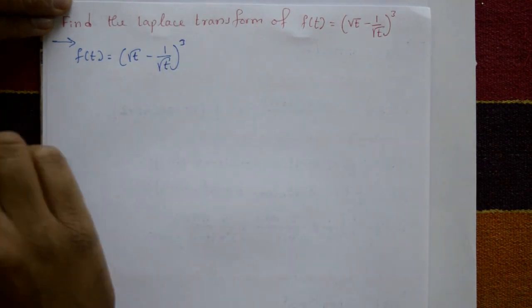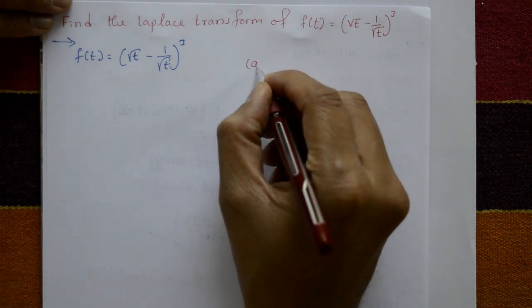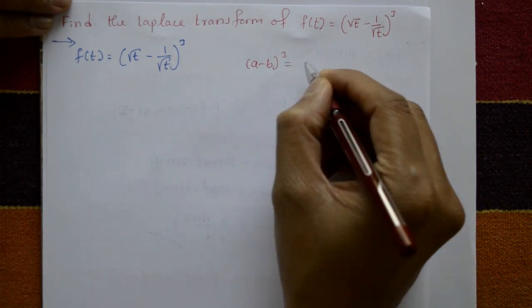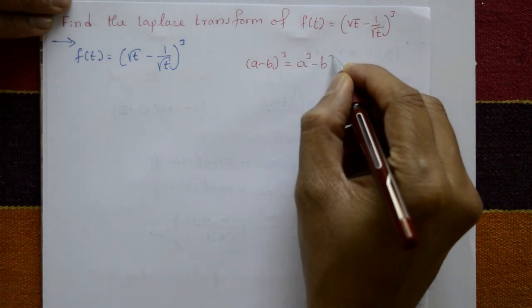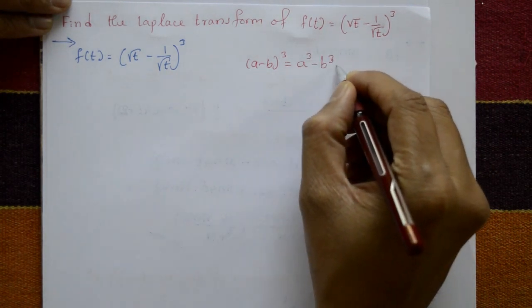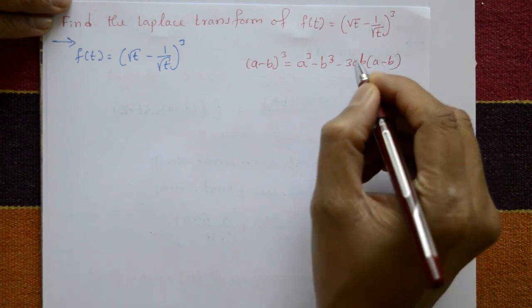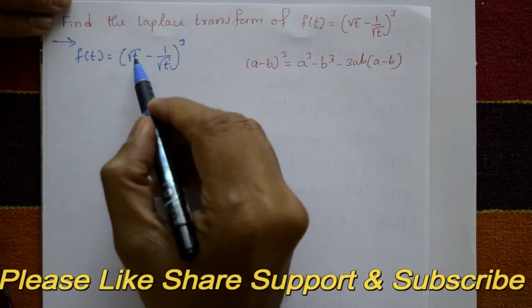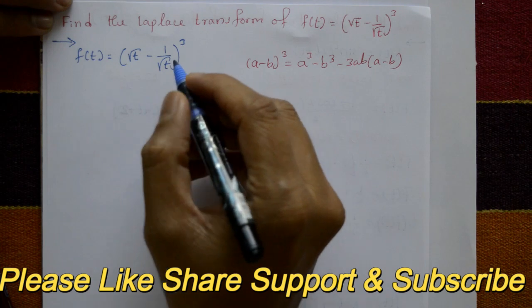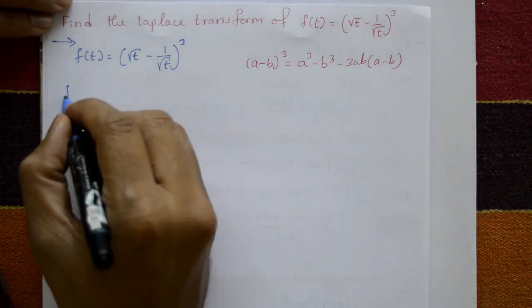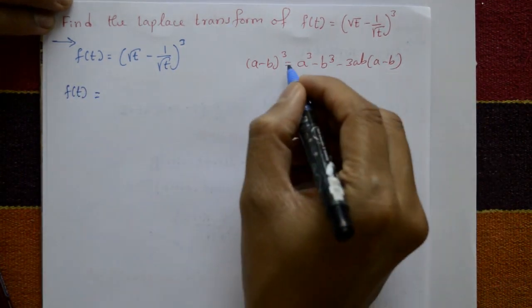We know the formula (a - b)³ = a³ - b³ - 3ab(a - b). Here, a = √t and b = 1/√t. Now f(t) is expanded using this formula.